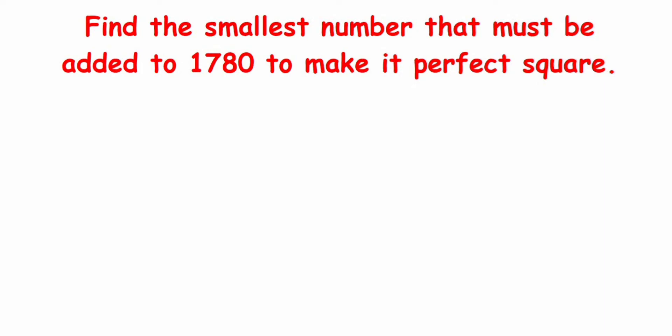Hey everyone, today's question is about square and square root. The question here is: find the smallest number that must be added to 1780 to make it perfect square.